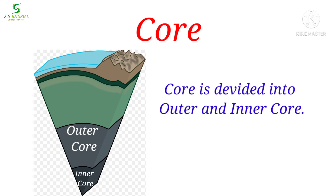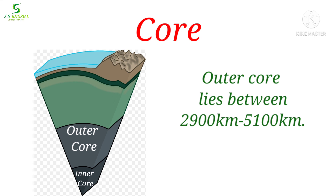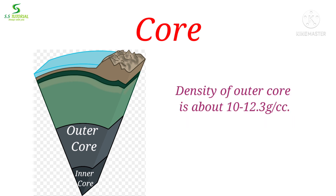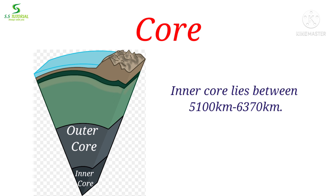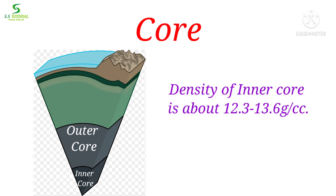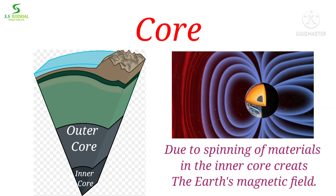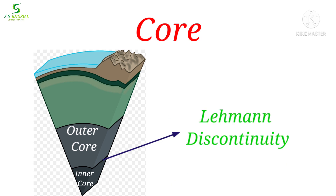The core is also divided into two sub-layers: outer core and inner core. The outer core lies between 2,900 km and 5,100 km, with a density of about 10 to 12.3 g per cubic centimetre. The inner core lies up to 6,370 km, with a density of about 12.3 to 13.6 g per cubic centimetre. The spinning of materials in the inner core creates the earth's magnetic field. The discontinuity between outer core and inner core is known as the Lehmann discontinuity.